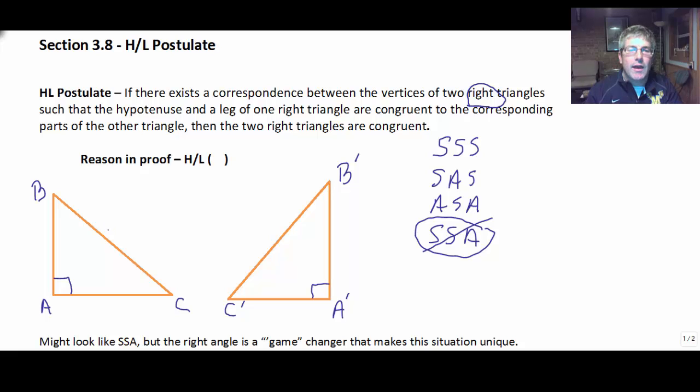So, in order to have hypotenuse leg, you've got to have the hypotenuse is congruent, and then one of the corresponding legs has to be congruent to the other corresponding leg.